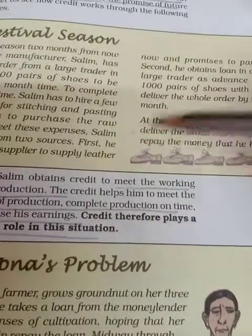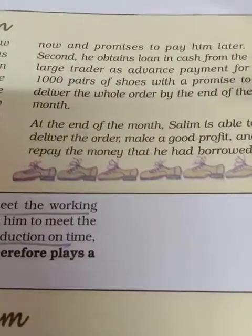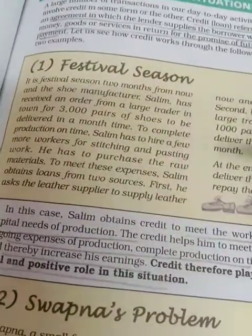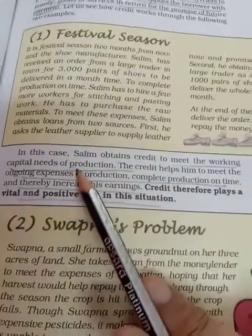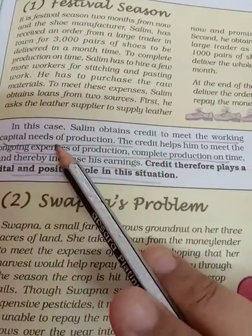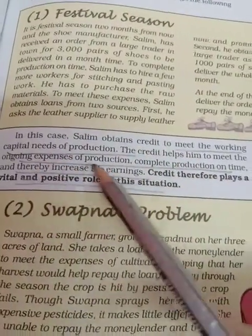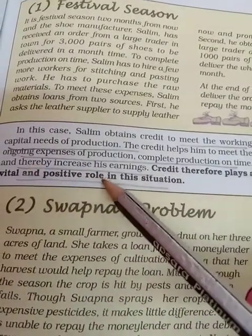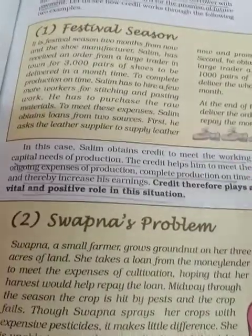Both parties were agreed and Salim was happy because he was able to deliver the order and make a profit. In this case, Salim obtained credit to meet the working capital needs of production. The credit helped him meet ongoing expenses, complete production on time, and thereby increase his earnings. Credit therefore plays a vital and positive role in this situation.